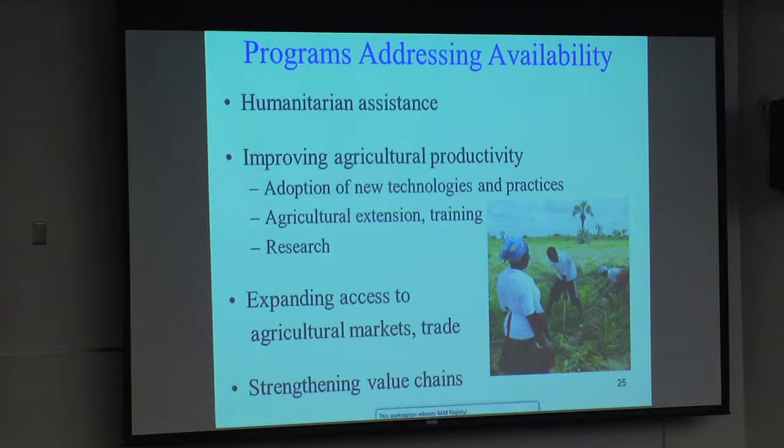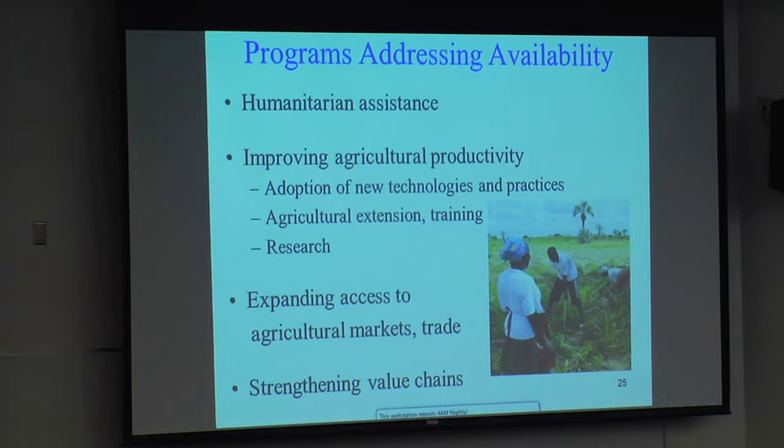Programs addressing food availability: certainly the biggest one we think about for food aid is humanitarian assistance. The examples we gave before — after a war, an earthquake, a flood, or a drought where there's just not food available — food aid as part of humanitarian assistance can be very important. Over the longer term, improving agricultural productivity is a critical approach, as is improving access to markets and trade so that people are able to access or sell their food.